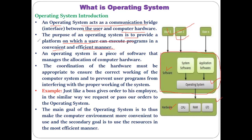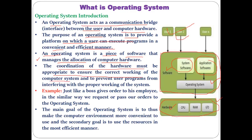All your instructions cannot be executed until you have the one platform that is the operating system. The operating system is simply a kind of software, but it is not application software — it is system software. If this system software is not installed on your computer, you cannot install any kind of application software either. The operating system is a piece of software that manages the allocation of computer hardware. To manage all hardware like CPU, RAM, and I/O devices, you need this important system program. The coordination of hardware must be appropriate to ensure the correct working of the computer system and to prevent user programs from interfering with proper system working.